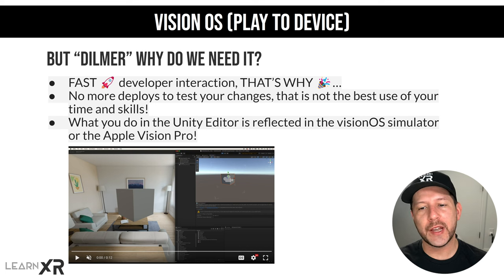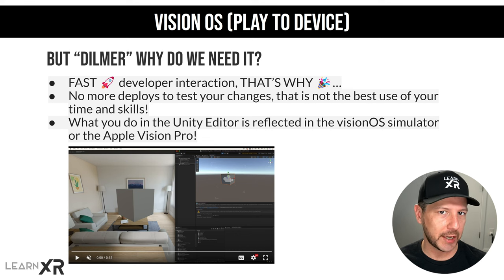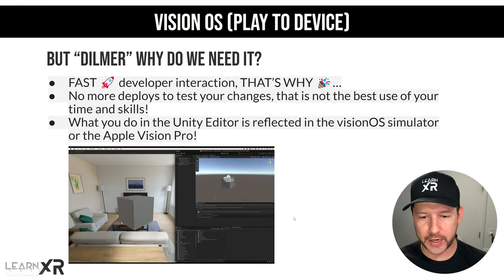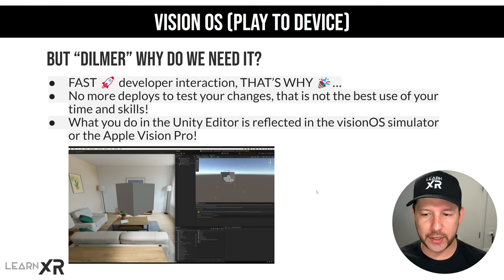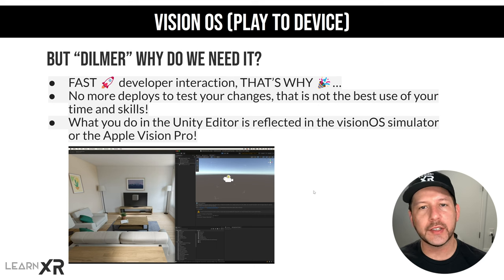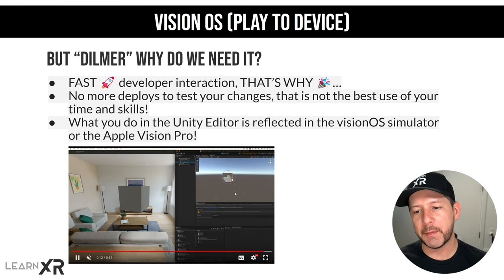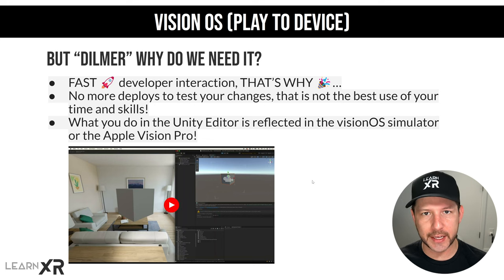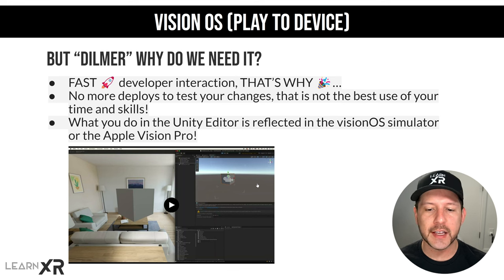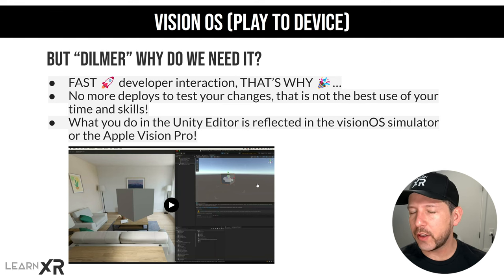What you do in the Unity editor is reflected in the VisionOS simulator or the Apple Vision Pro. This application can run either on the simulator or the actual physical device. You can see that we have the Unity editor on the right — I'm rotating the cube and that is reflected right away on the simulator on the left side. We can scale it. One thing I really like is this is a bounded experience, so when the cube goes beyond the limits it gets cut off — great things to test with this tool.